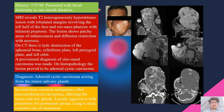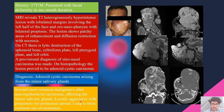A 37-year-old man presented with facial deformity. MRI showed a T2 heterogeneously hyperintense, lobulated lesion involving the left half of the face and oropharynx with bilateral proptosis. The lesion showed patchy enhancement, diffusion restriction, and areas of necrosis. CT demonstrated lytic destruction of the sphenoid bone, cribriform plate, pterygoid plate, and left orbit. A provisional diagnosis of sinonasal carcinoma was made; however, histopathology proved adenoid cystic carcinoma, the second most common malignancy after mucoepidermoid carcinoma affecting the minor salivary glands. Lung metastasis was present.